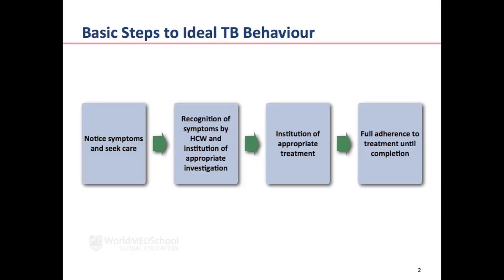It's important that all healthcare workers, patients, and communities adopt ideal TB behaviour to optimise treatment outcomes. At the community and individual level, people who develop symptoms of TB must notice those symptoms and urgently seek care. When patients present to healthcare workers, those workers should recognise the symptoms and institute appropriate investigations. Once the diagnosis is made, treatment must be rapidly instituted and the patient supported to adhere until completion, forming the basis for TB care and control in all public health programmes.